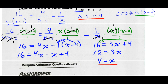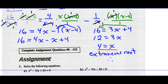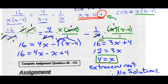Looking at this result and our restrictions, x is not allowed to equal 4 — that's one of our restrictions. So we call this an extraneous root. This equation has no solutions, because the only solution we came up with is extraneous — we're not allowed to have x equals 4 based on our non-permissible values. You can now try some of the questions from 6 through 12. Well done.